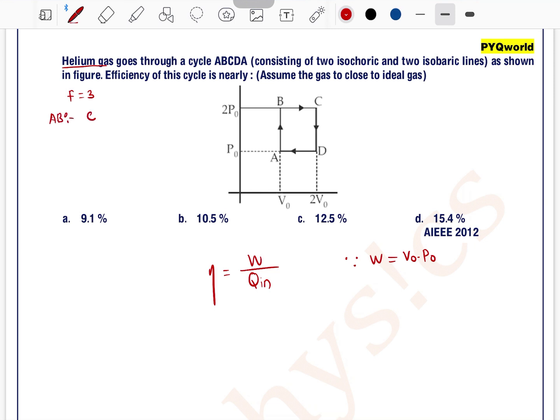For AB process we can write it is an isochoric process. So for isochoric process Q equals nC_V delta T, that is F by 2 nR delta T. As we do not have delta T here we can convert this formula by using ideal gas equation that is V into delta P. So Q equals F by 2 V₀ delta P. V is V₀ and delta P is P₀. So this is the heat in process AB.